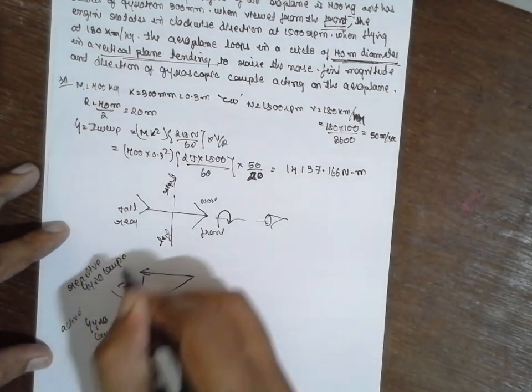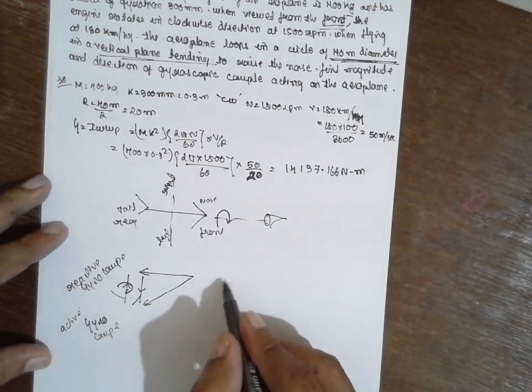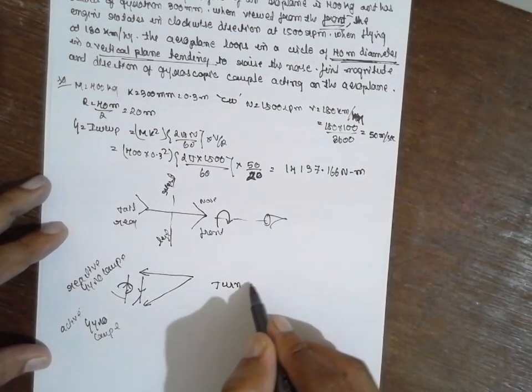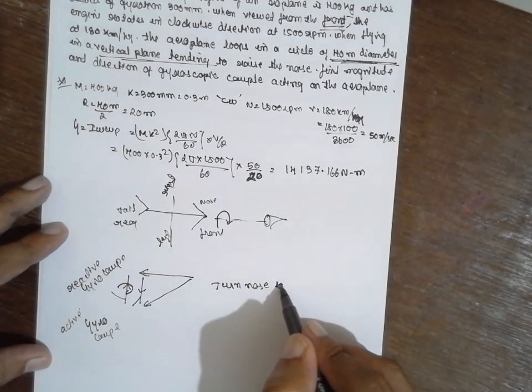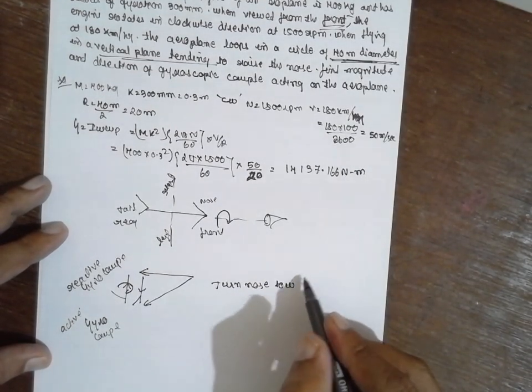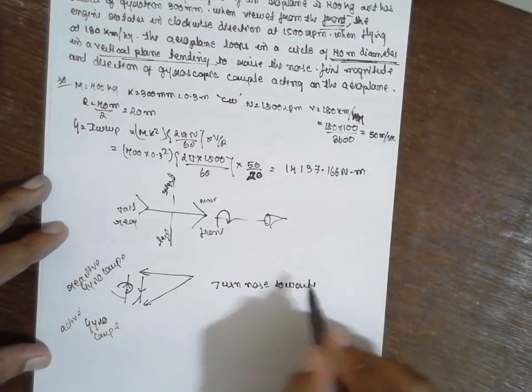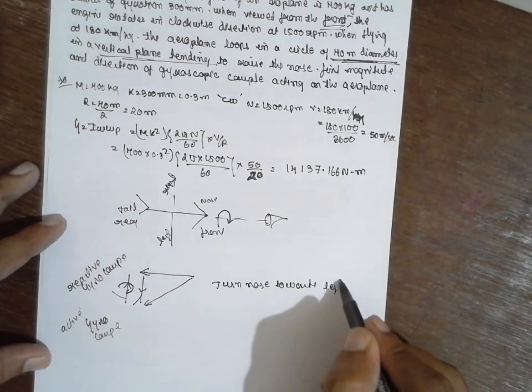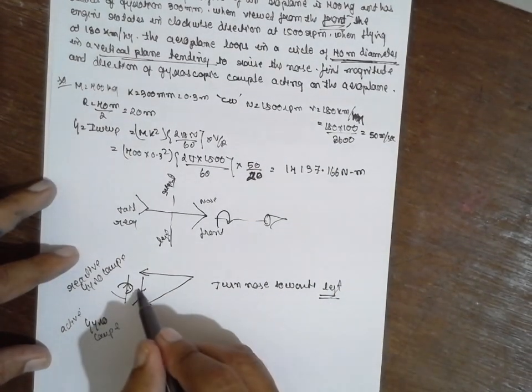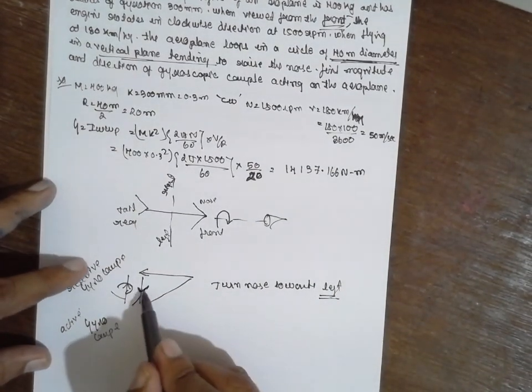Now here what happened? The nose, the effect will be nose turn towards. Now nose will be turns towards left. Based on this direction you have to say nose will be turns towards left.